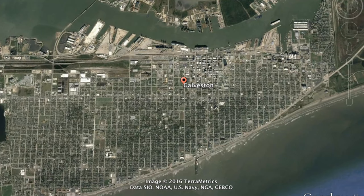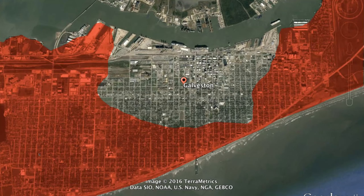This is what Galveston looks like today. The area shown in red on the map is the area that was wiped clean — scoured and leveled by the storm. The area near the name 'Galveston' on the map is the higher elevation part of town, and many buildings there did survive.